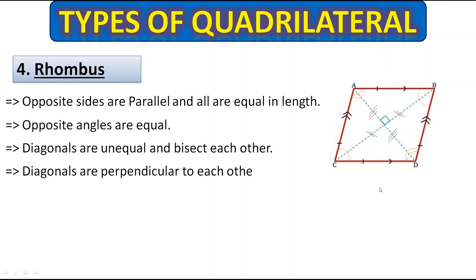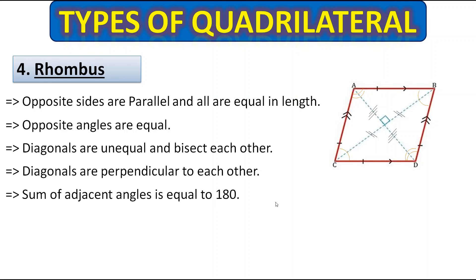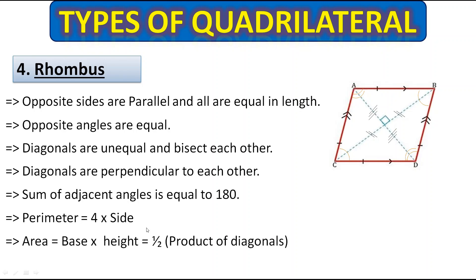Diagonals are perpendicular to each other, making 90 degrees at intersection. The sum of adjacent angles equals 180 degrees. To find the perimeter, multiply 4 by the side, since all sides are equal. To find the area, multiply base by height. Alternatively, multiply the two diagonal lengths and divide by 2 to get the area of the rhombus.